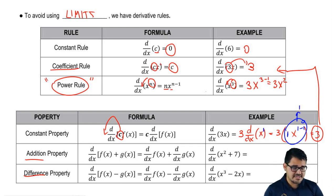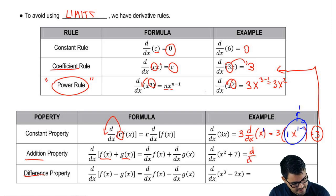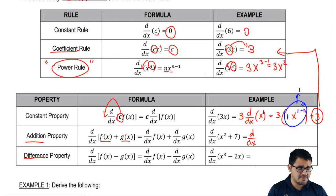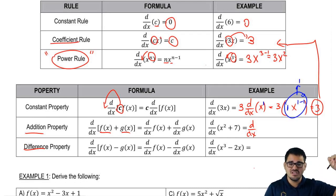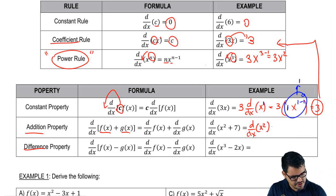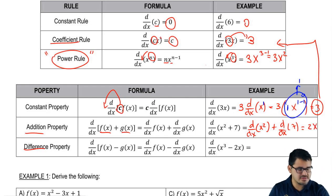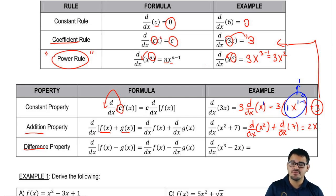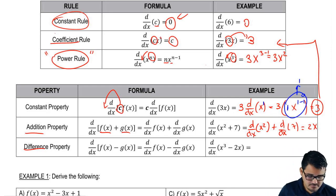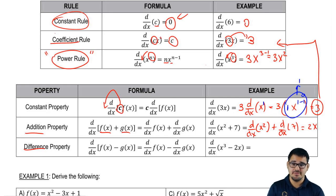Now let's go to the addition property: when you have two functions adding, the derivative equals the derivatives of f and g individually. For example, the derivative of x² + 7: the derivative of x² brings down the 2, giving 2x (subtract 1 from the exponent, exponent becomes 1), plus the derivative of 7, which is a constant, so it's 0 by the constant rule. The answer is just 2x. That would have taken a long time using the difference quotient, but now it's much faster.